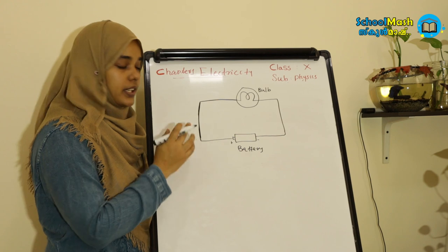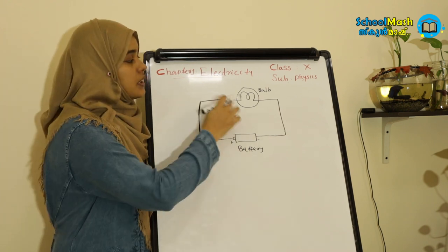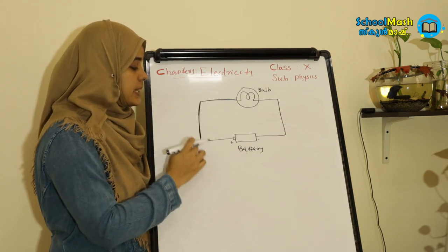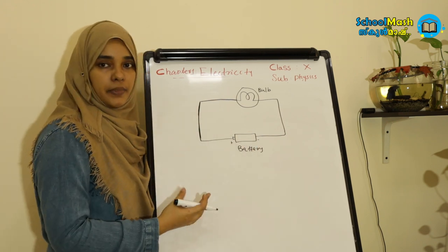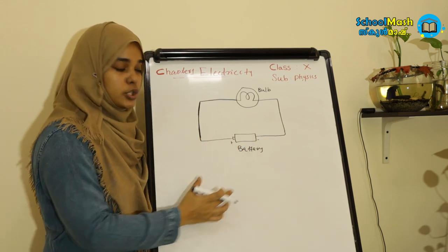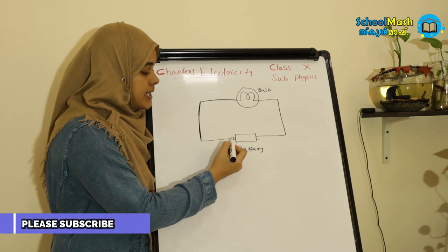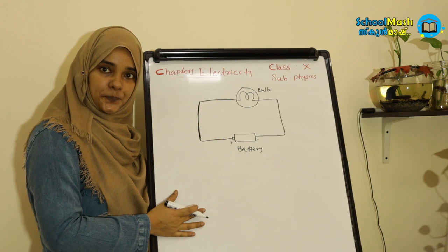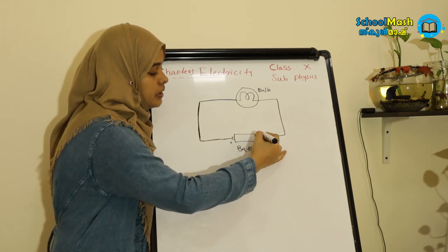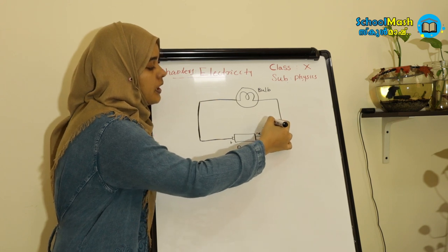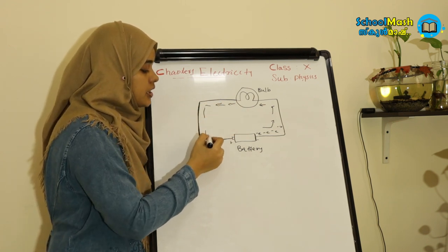A circuit consists of a battery connected to a device like a bulb using metallic wires. The battery provides an external force for the electrons. When the battery is connected, electrons flow starts through the metallic conductors from the negative terminal, passes through the bulb, and the electric current comes out at the positive terminal.